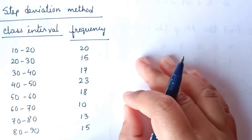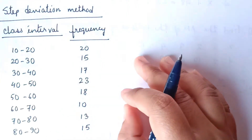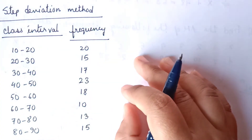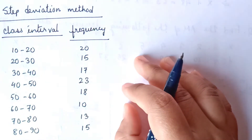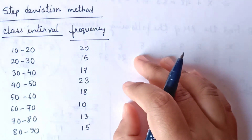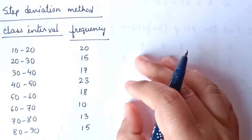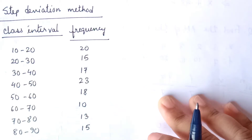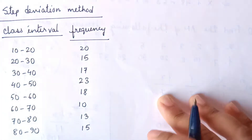Hello everyone, this is Rashmi and today we are going to discuss finding the arithmetic mean value by using the step deviation method. To solve by step deviation method, first of all we have to find out all the mean values of the class interval.